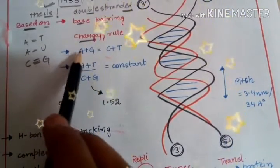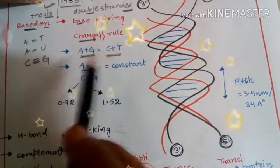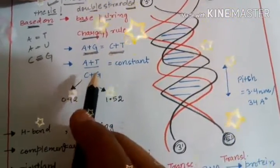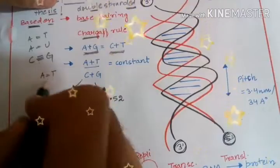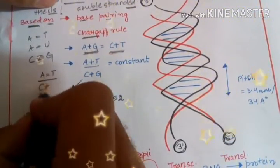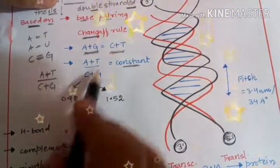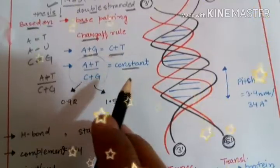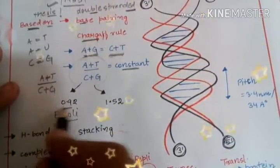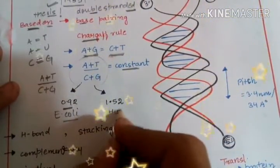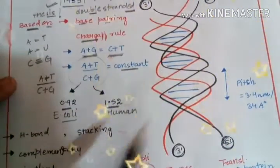It says that A plus G, that is purines, is equal to C plus T, that is pyrimidines. And it also suggests that A plus T and C plus G is equal to a constant. This particular ratio is equal to a constant for a particular species. For example, if we will talk about E. coli, the value of this ratio is 0.92, and if we will talk about human beings, its value is 1.52.